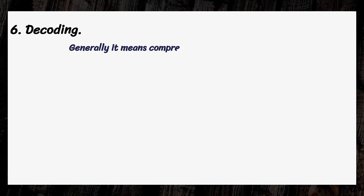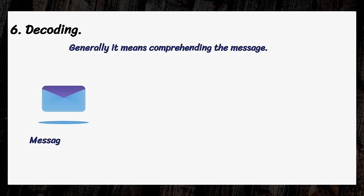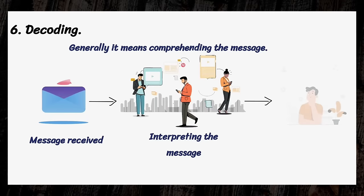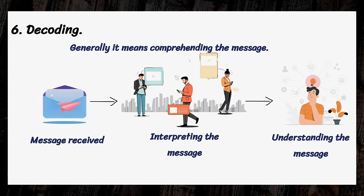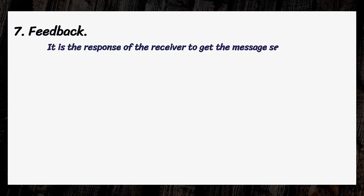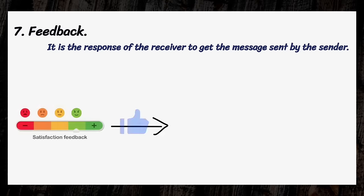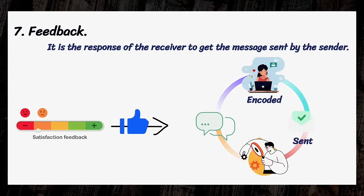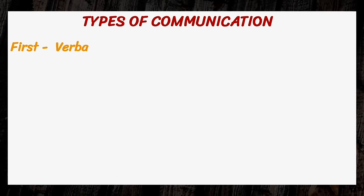Decoding generally means comprehending the message. After receiving the message, the receiver interprets it and tries to understand it in the best possible manner. Feedback is the response of the receiver to the message sent by the sender. Feedback is necessary to ensure that the message has been successfully encoded, sent, and decoded.